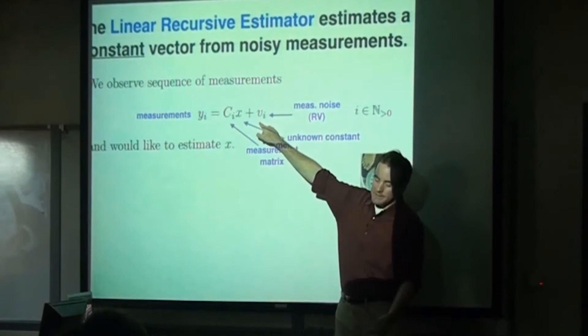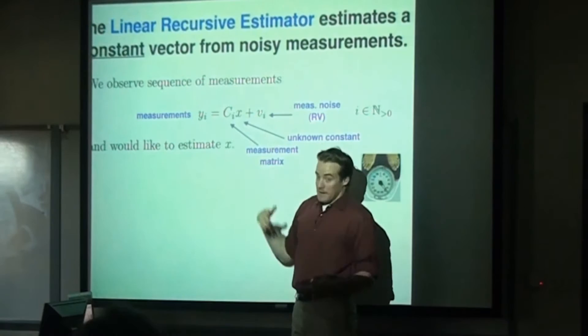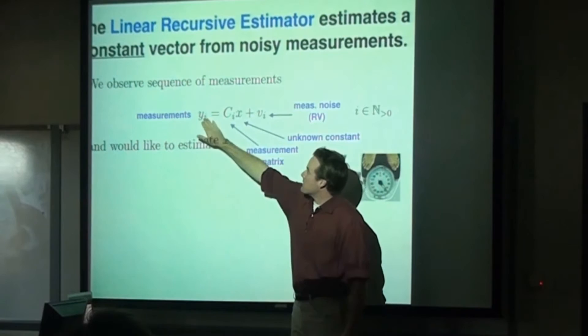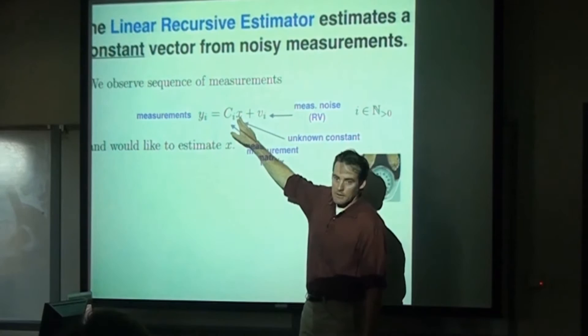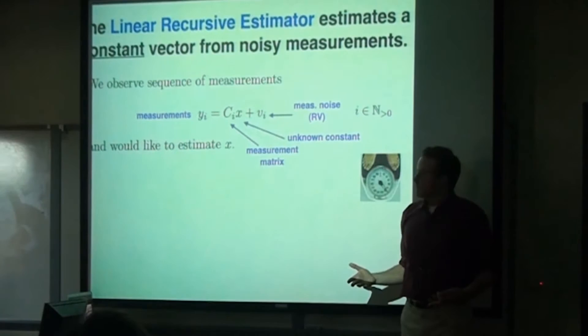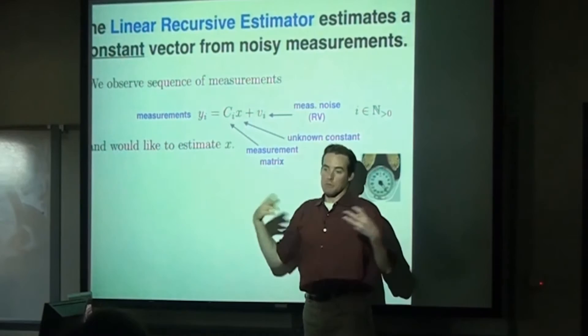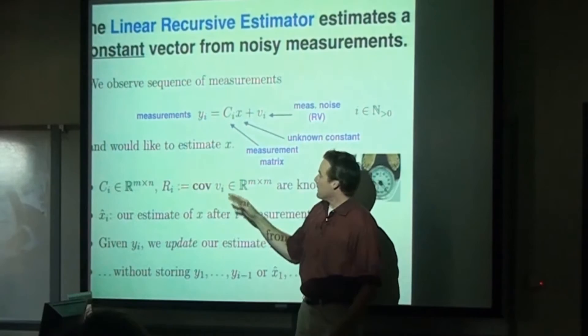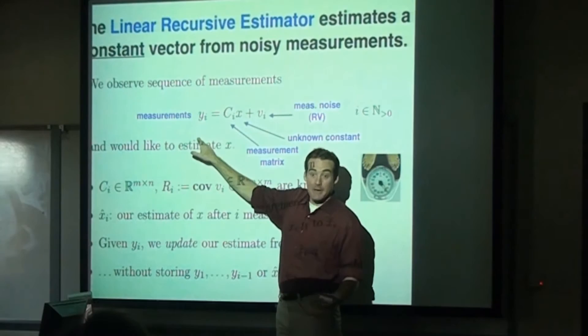So if there are 15 people in the room and you make 100 measurements, you have a 100-long vector of measurements, a 100-by-15 matrix C, and a 15-long vector of unknown weights. That's the problem setup for the linear recursive estimator — this is not a dynamical system, this is a constant vector and we're making repeated measurements over it. C is some matrix, R is the covariance of the noise, and there's a state estimate x-hat-i — our estimate of the thing we're looking for after i measurements. The key trick: you're not allowed to store any of the previous measurements and not allowed to store any of the previous state estimates except for the very last one.